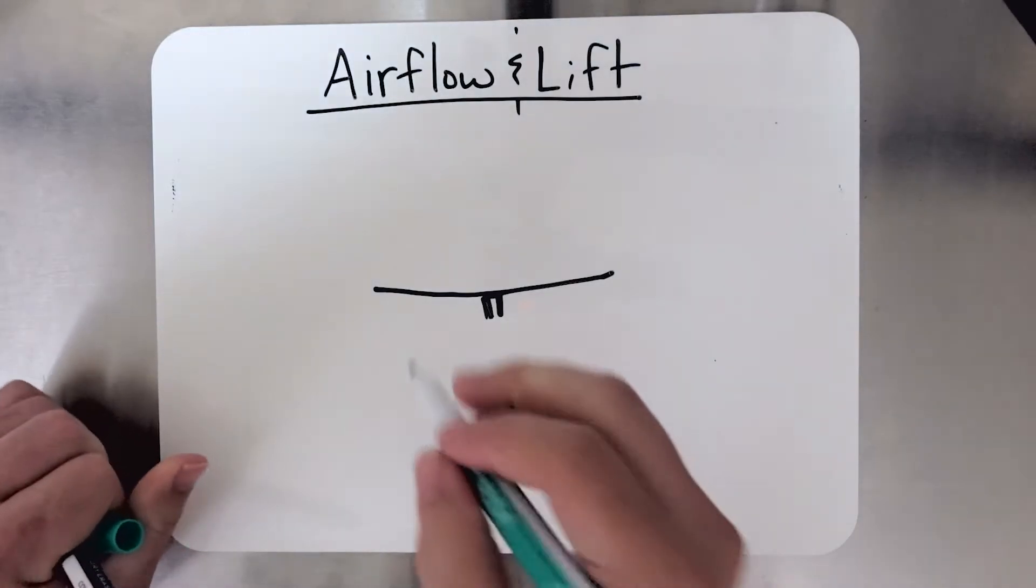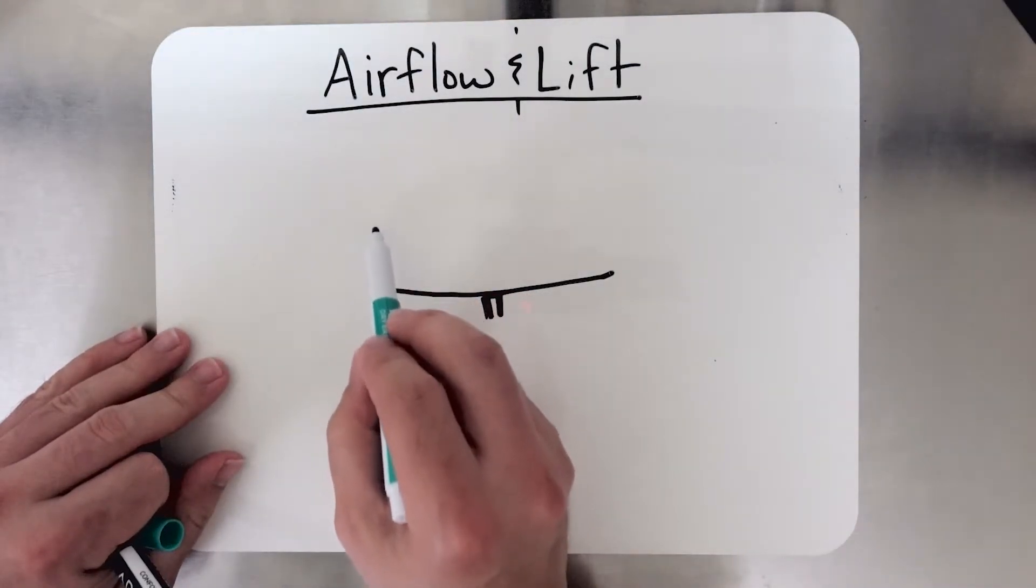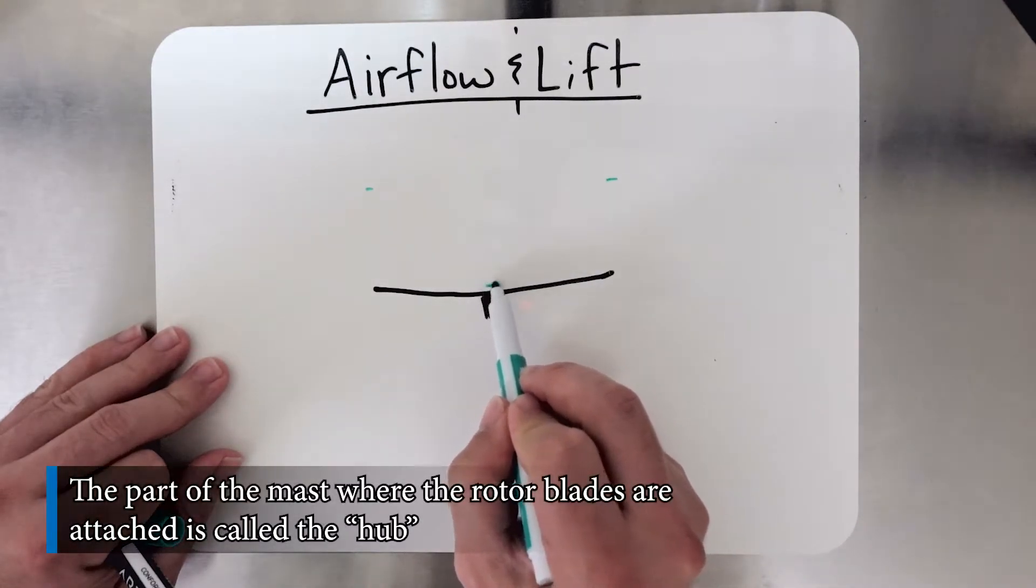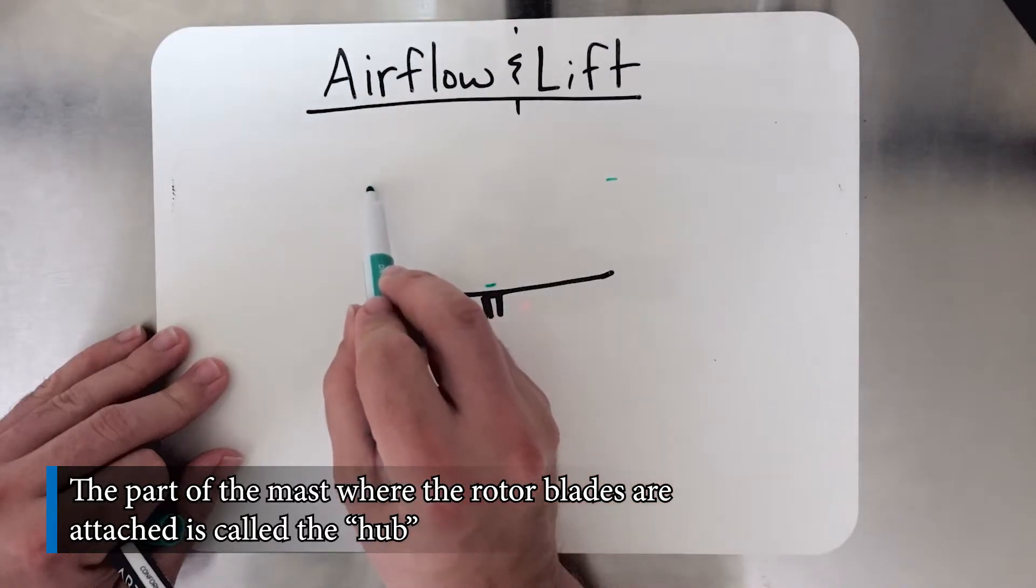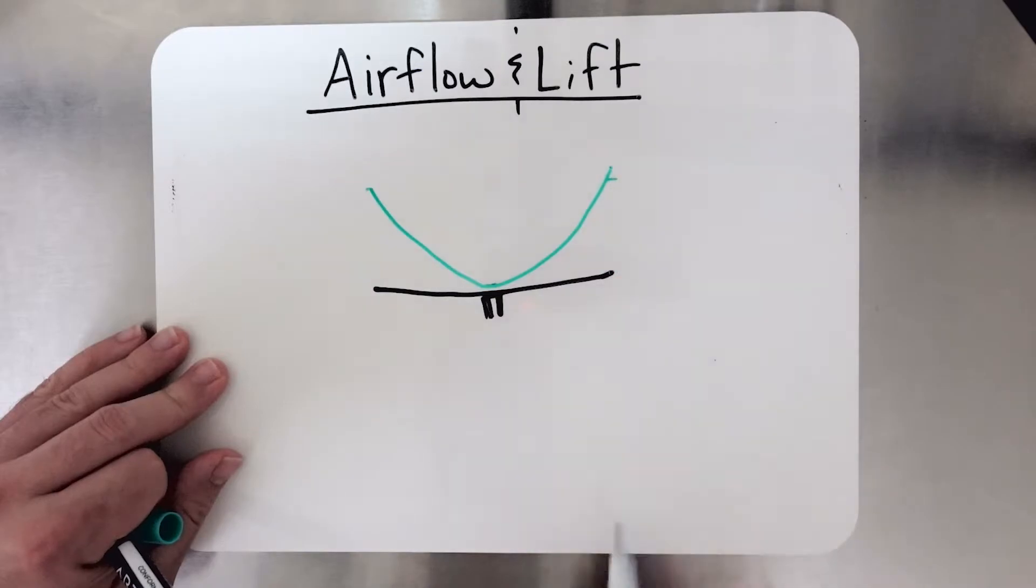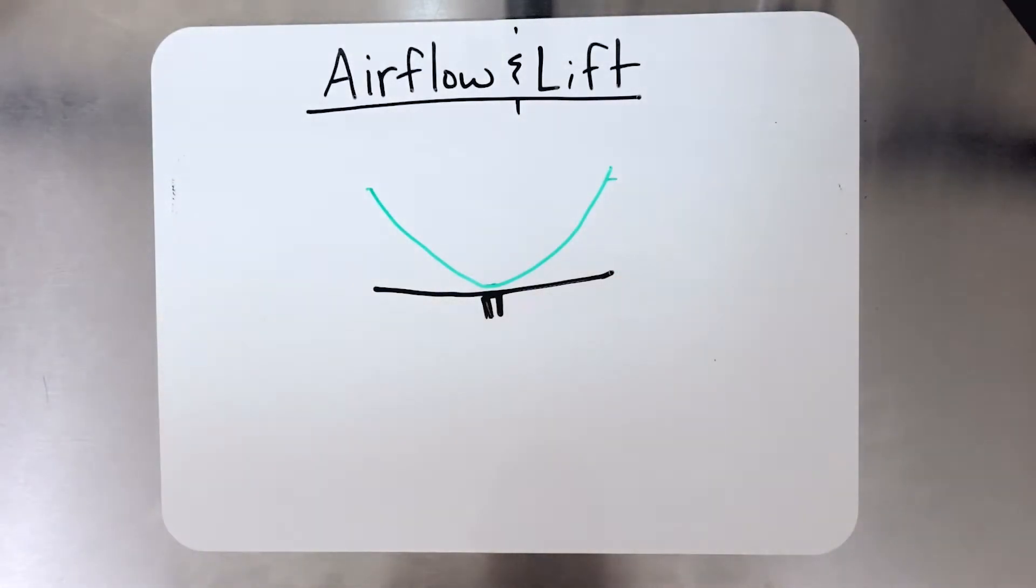So to map out the velocity on a curve up here at the tips, we're going to have very high velocity. And here at the mast, we're going to have a very low velocity. We can kind of map that velocity out something like this, right? So high velocity at the tips, low velocity at the roots or at the mast.